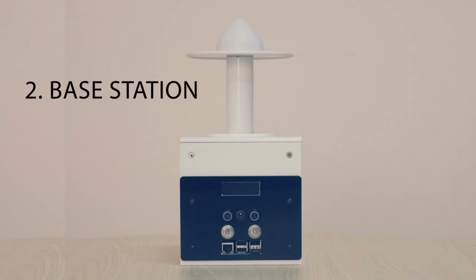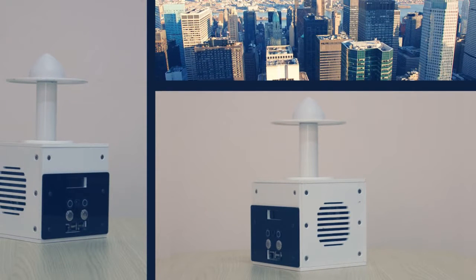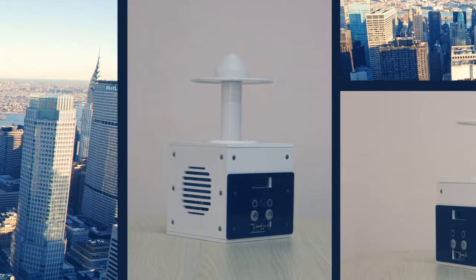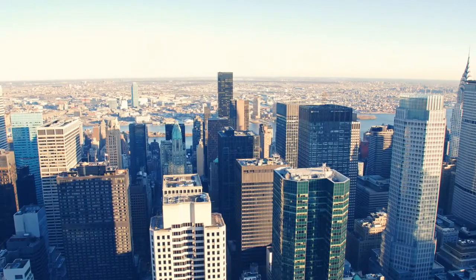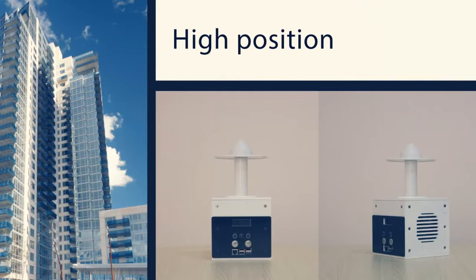The Base Station enhances GPS precision for the Rover. The system can work continuously for 10 hours at a speed of 60 km per hour. The Base Station is placed on a high and clear position, such as on top of a building where the GPS signal is best.